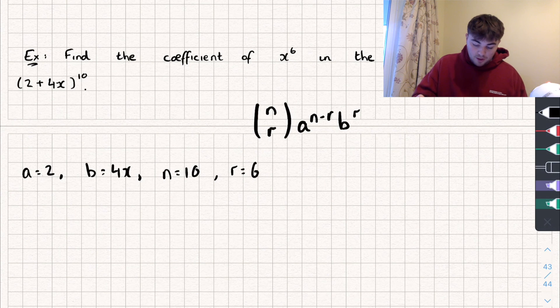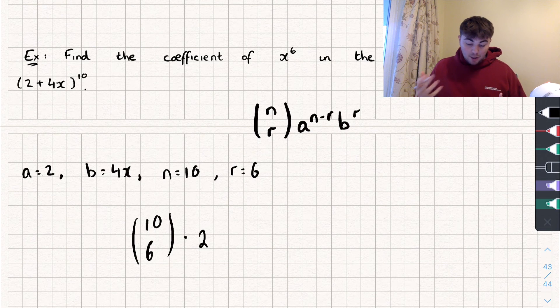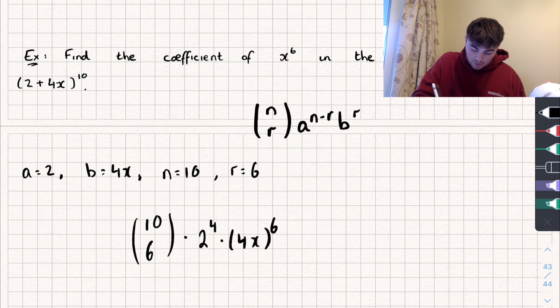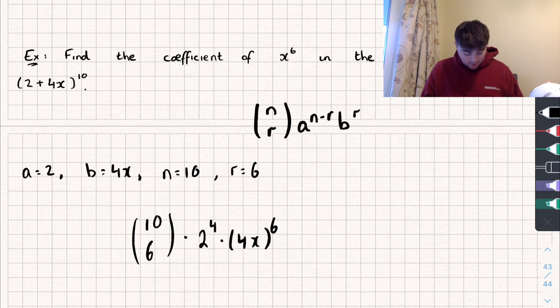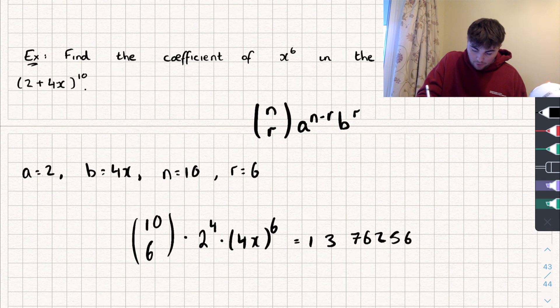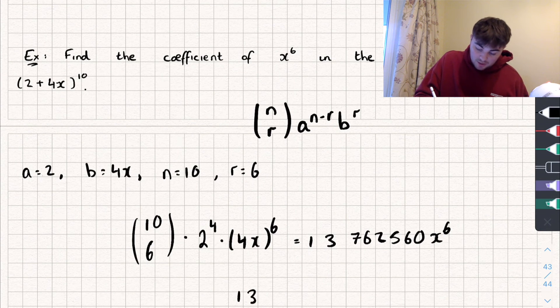Now let's work that out, let's just substitute everything in. So we've got 10 choose 6, multiplied by a to the power of n minus r, so 10 minus 6, which is 4, multiplied by b, which is 4x, to the power of r, which is 6. So now I'm just going to work this out on my calculator again. So 10 choose 6, multiplied by 2 to the power of 4, multiplied by 4 to the power of 6. And this gives me 13,762,560x to the power of 6. But we don't want that, we just want the coefficient, so my answer is 13,762,560.